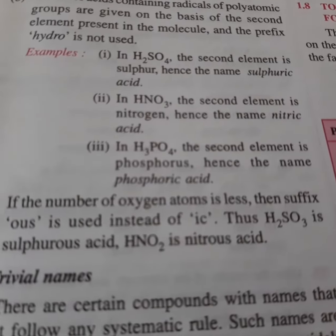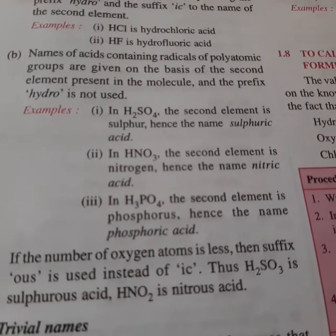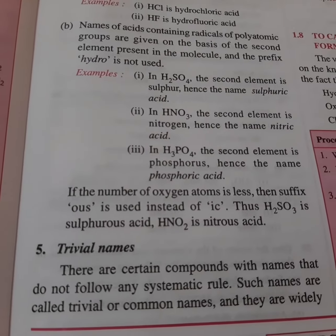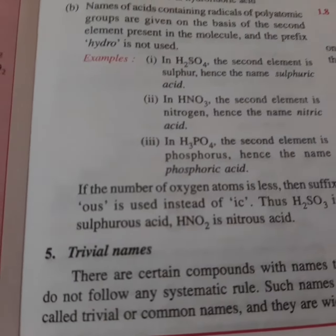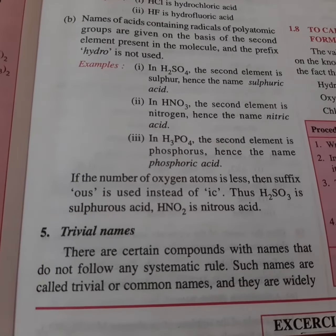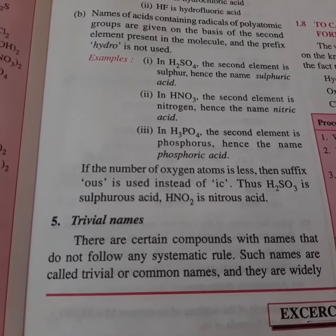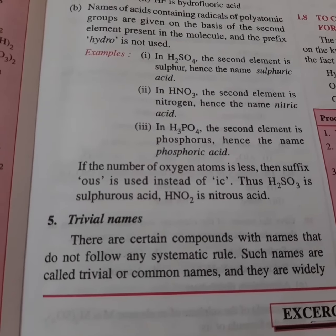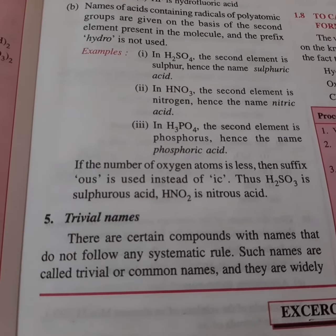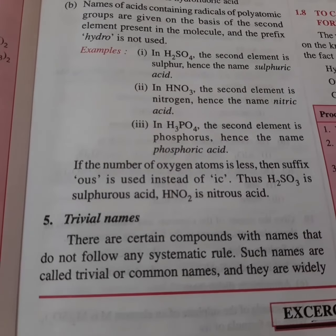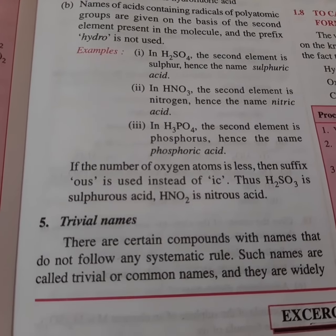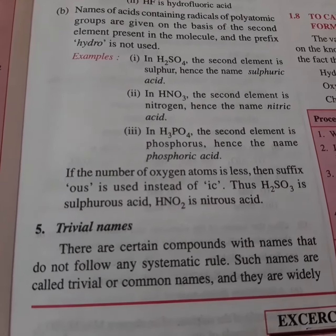The third example is phosphoric acid — H3PO4. The second element here is phosphorus, so the name comes as phosphoric acid. If the number of oxygen atoms is less, the suffix -OUS is used instead of -IC. So H2SO3 is sulfurous acid, HNO2 is nitrous acid, and H3PO3 is phosphorous acid.